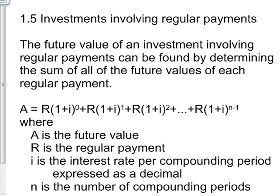Section 1.5 is titled Investments Involving Regular Payments. The future value of an investment involving regular payments can be found by determining the sum of all the future values of each regular payment.